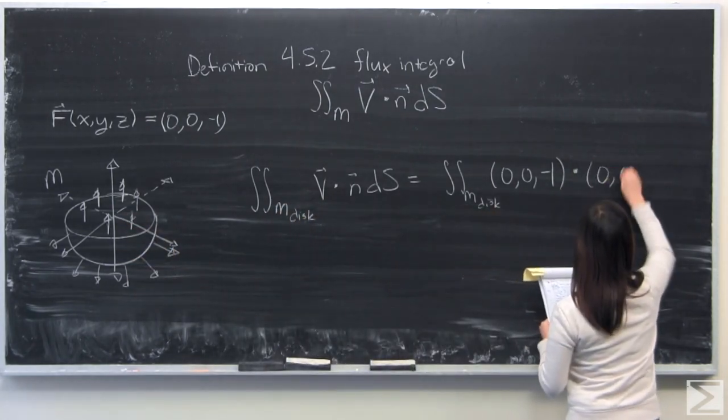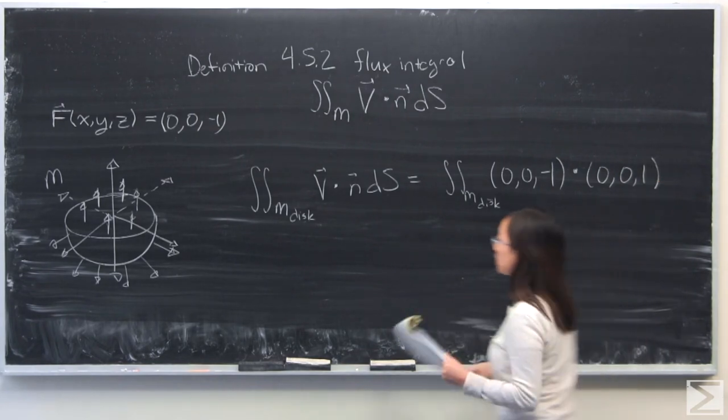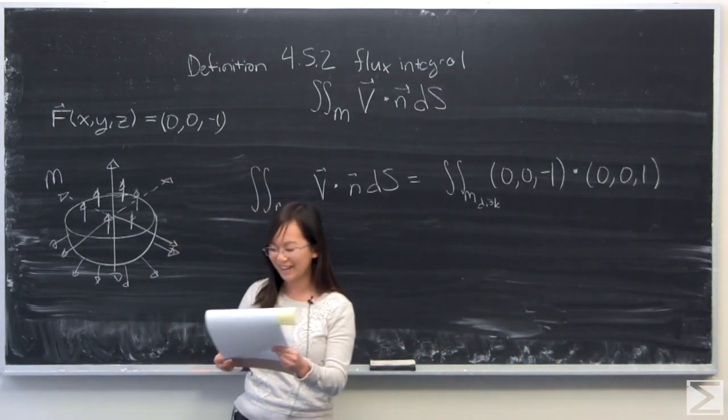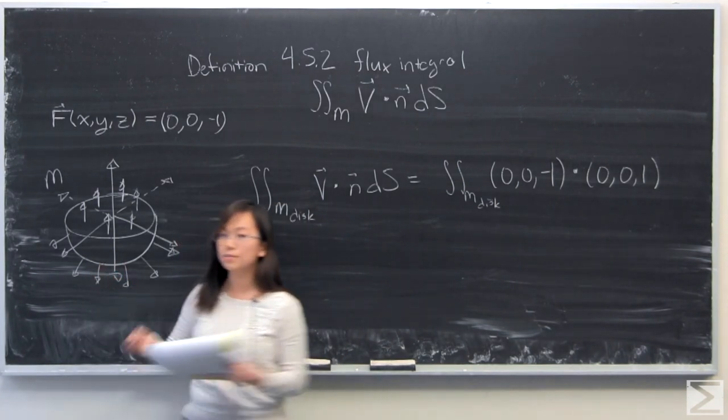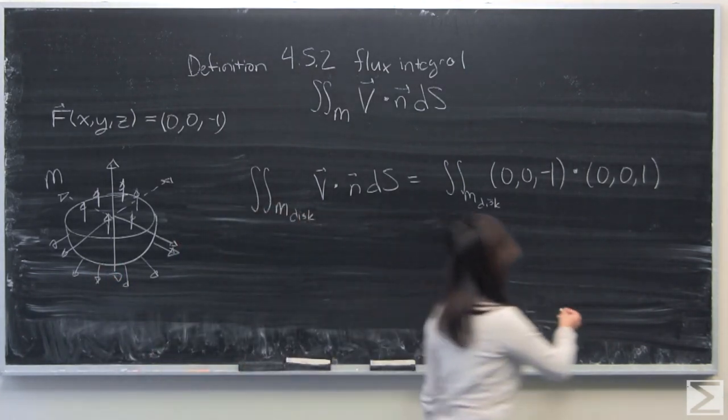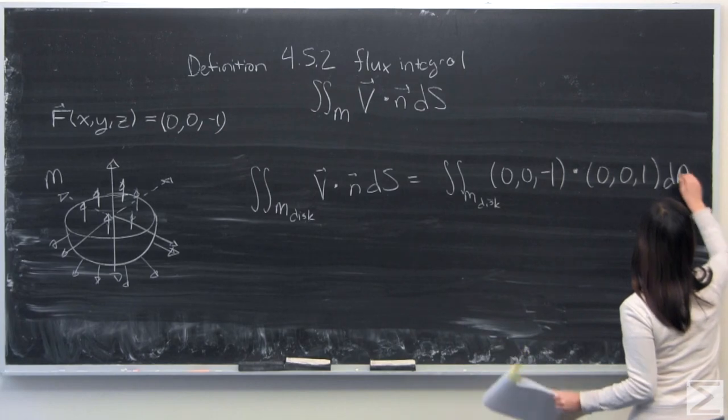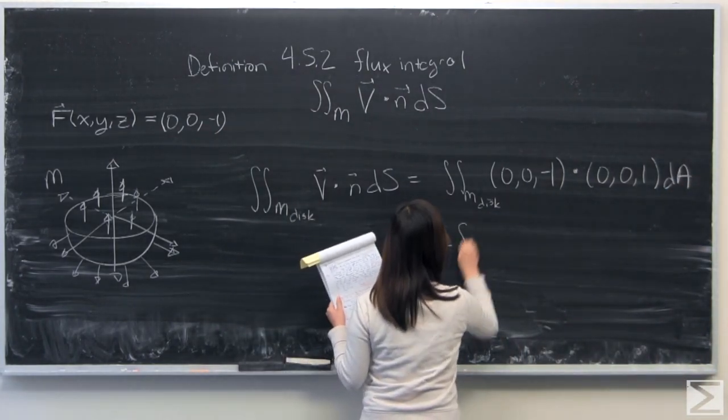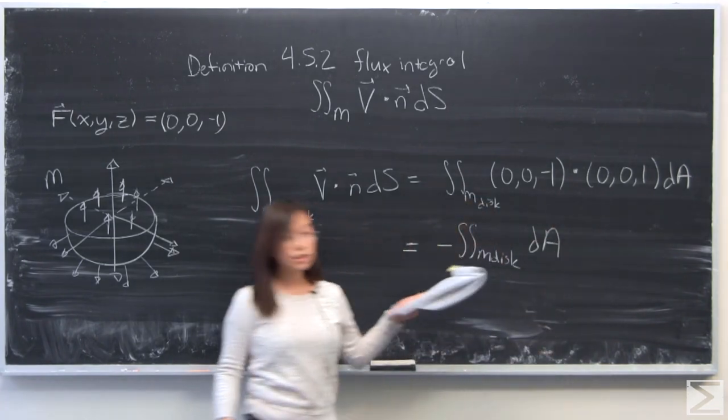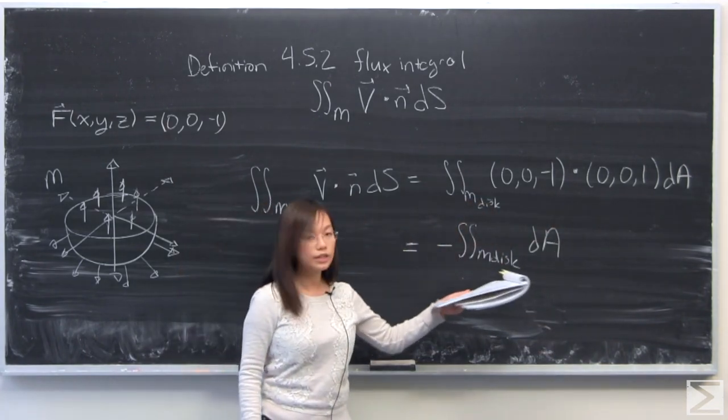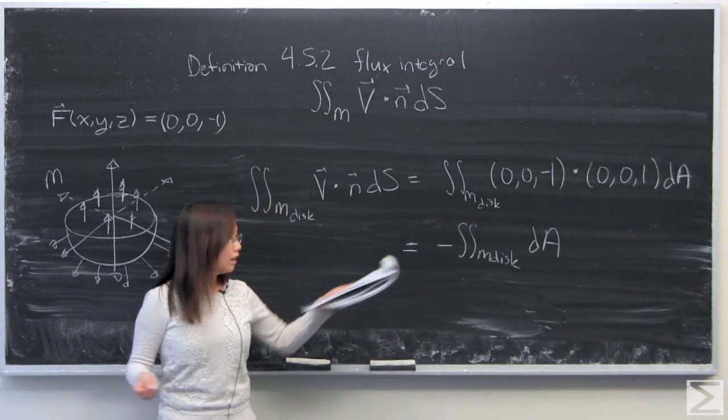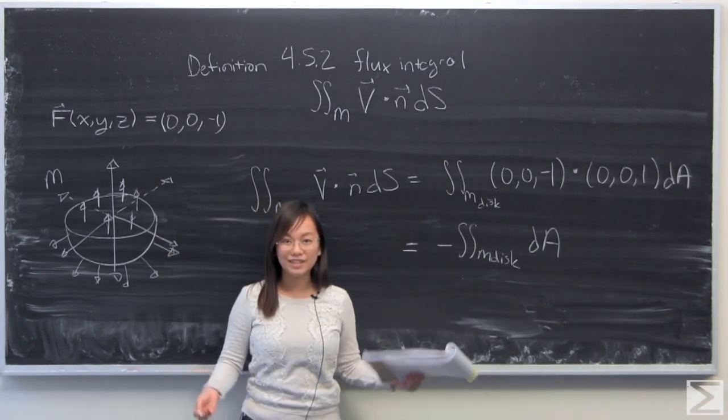So K is equal to (0, 0, 1). And then for ds, this is a flat disk with a constant z, we can just put dA for ds. So carrying out that dot product is very simple. This is what you get from that. And this is very simply an area integral for a disk.